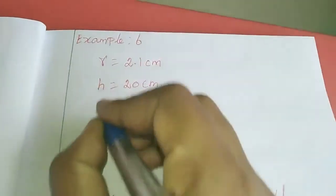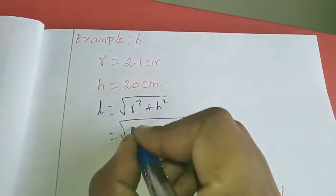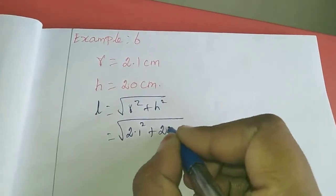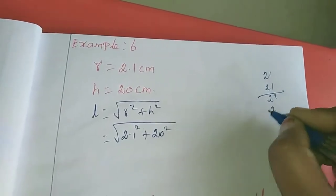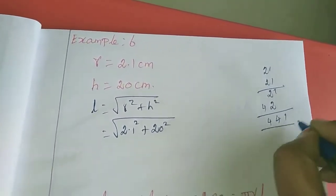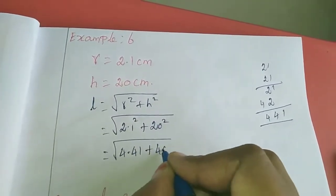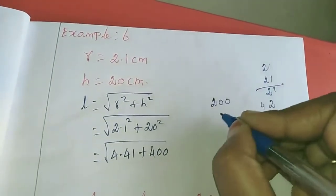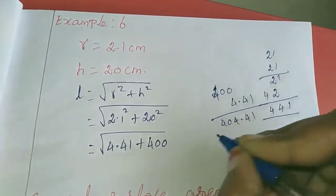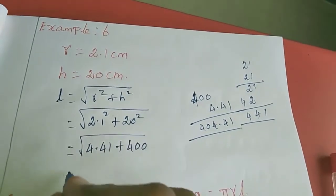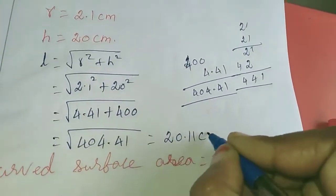This is the information they gave. We need the l value, so l equals square root of r square plus h square, that is square root of 2.1 square plus 20 square. 2.1 square is 4.41, plus 20 square means 400. So 400 plus 4.41 is 404.41. Square root of 404.41, the answer is 20.11 cm.